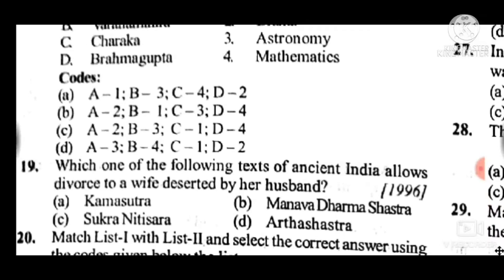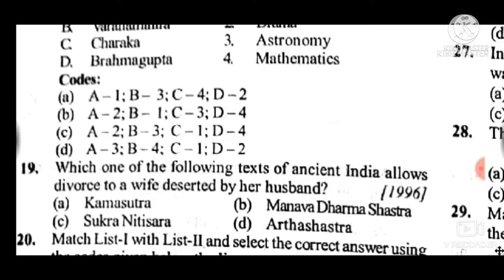Question 19: Which of the following texts of ancient India allows divorce to a wife deserted by her husband? The answer to question 19 is C, Arthashastra.